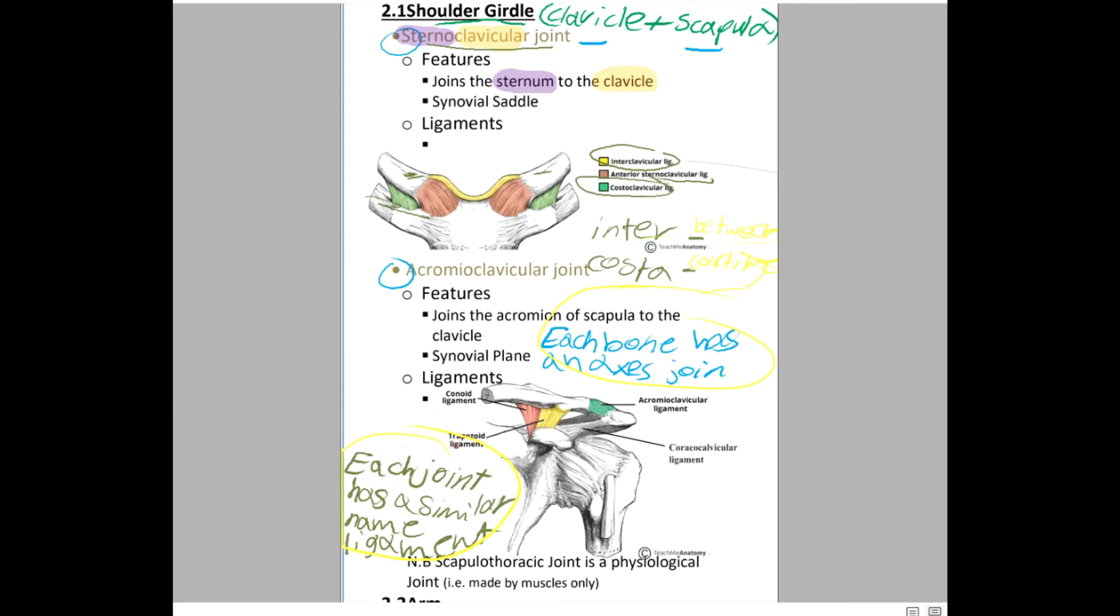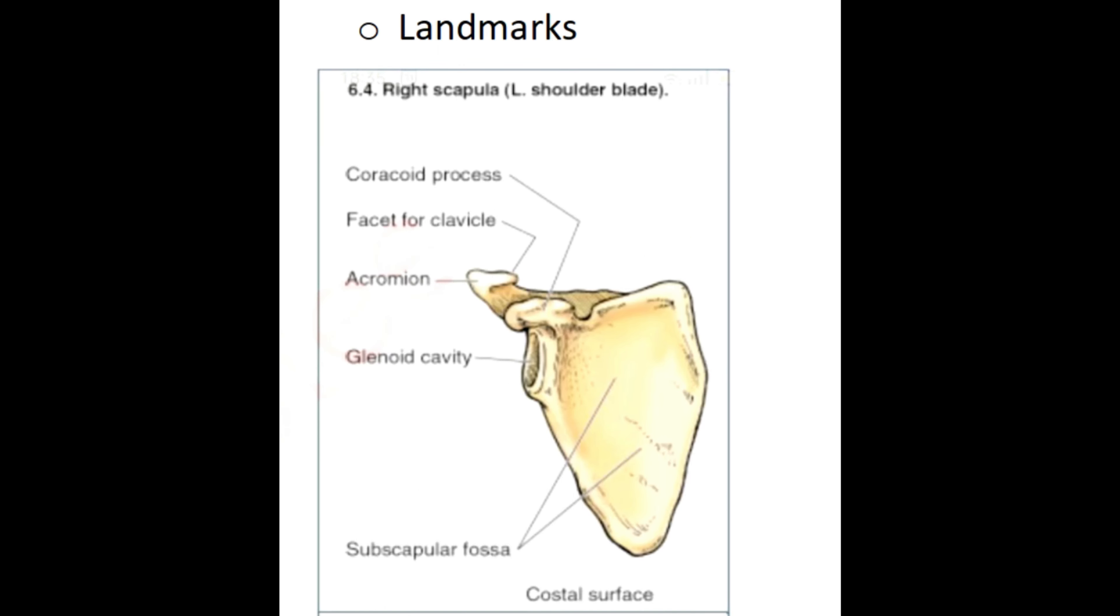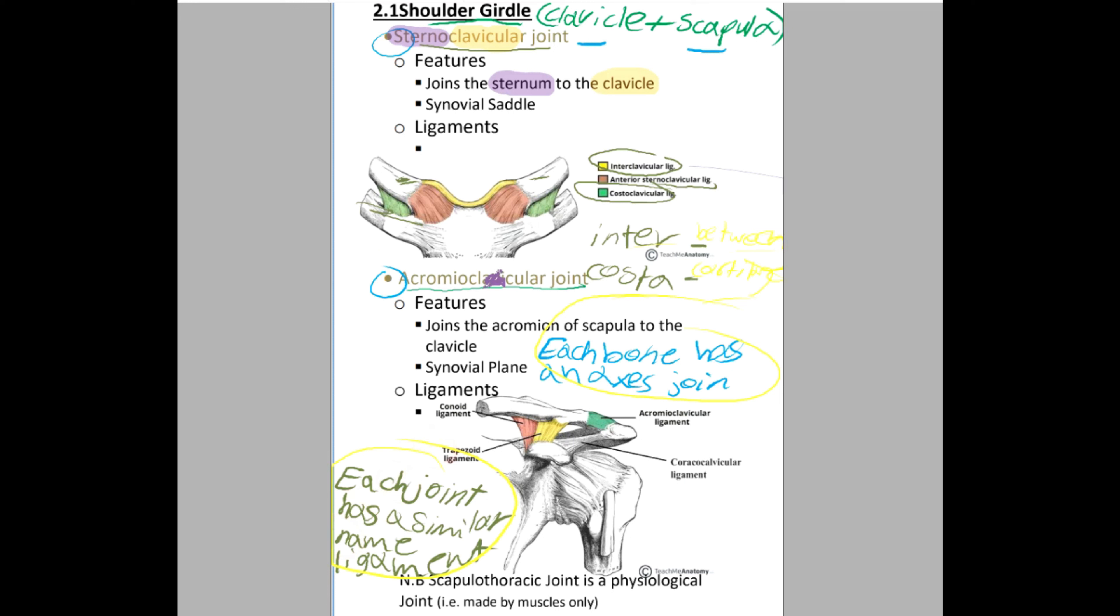Now for this next joint, the acromioclavicular joint, we need first to remember the scapula landmarks, returning to the previous chapter yum notes. We have the landmarks of the scapula here in the shoulder girdle bones: the coracoid process which refers to this part here and the acromion process is that part here. You need to know for our joint now. So our next joint here, the acromioclavicular joint, joins the acromion of the scapula to the clavicle.